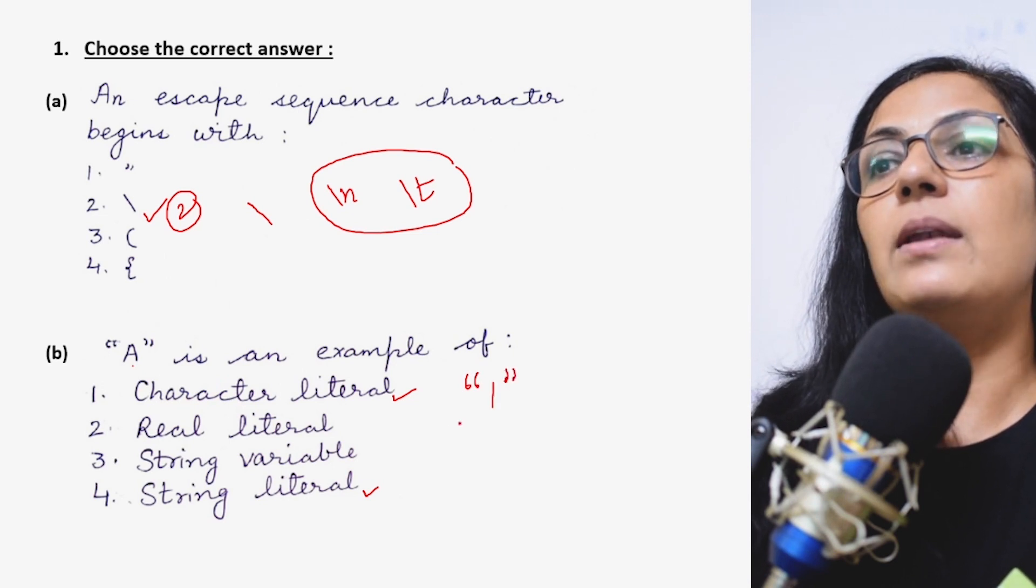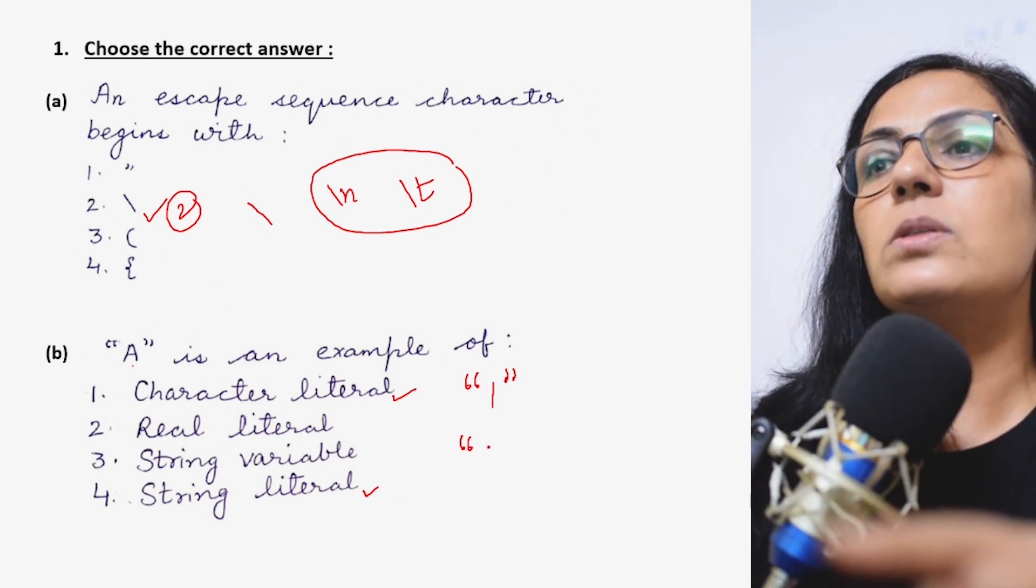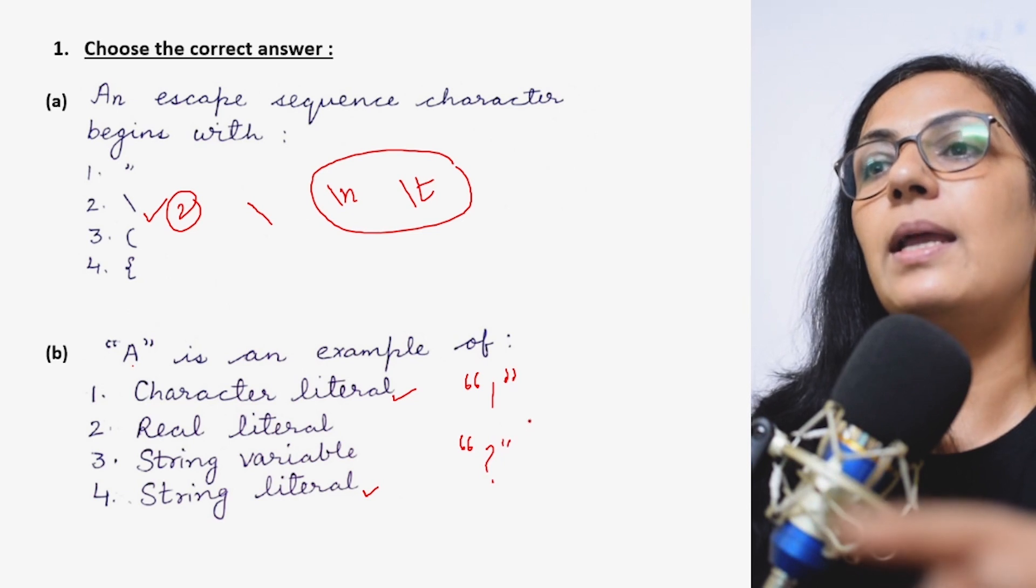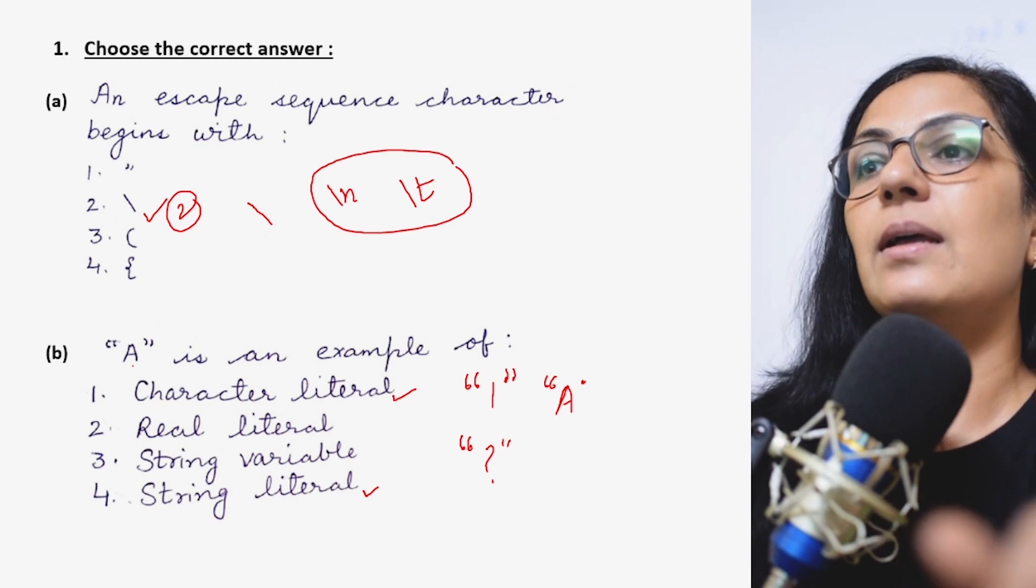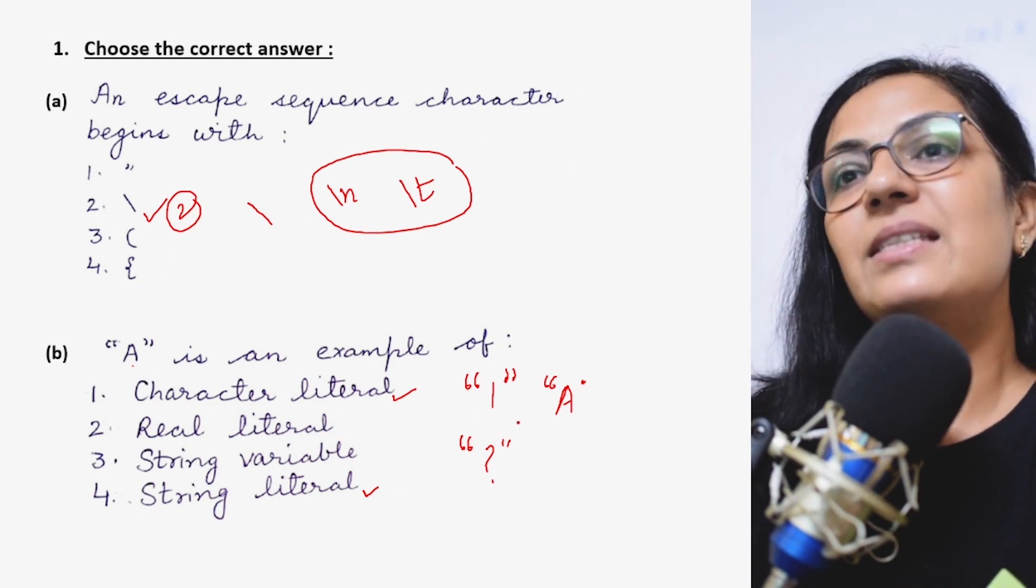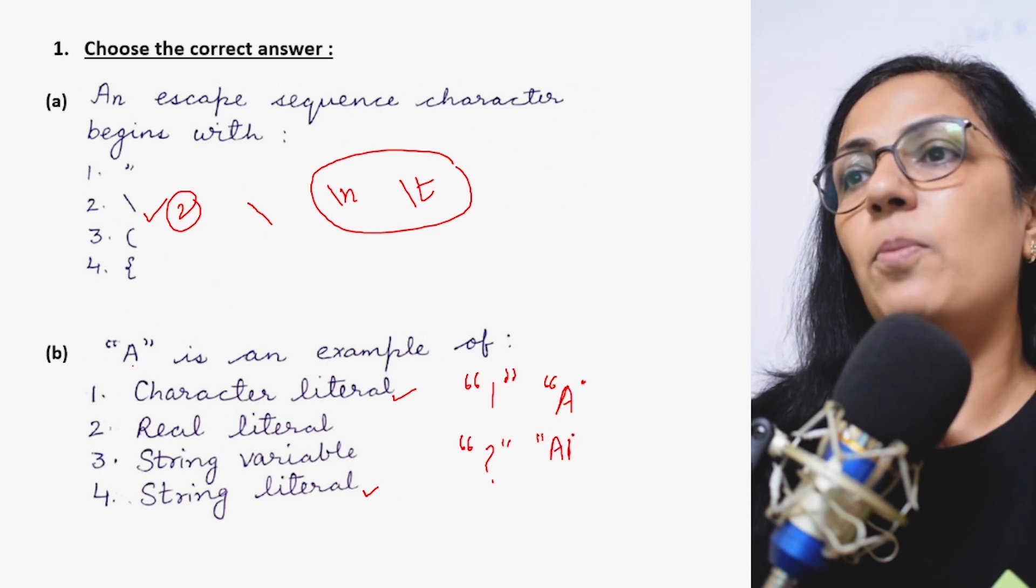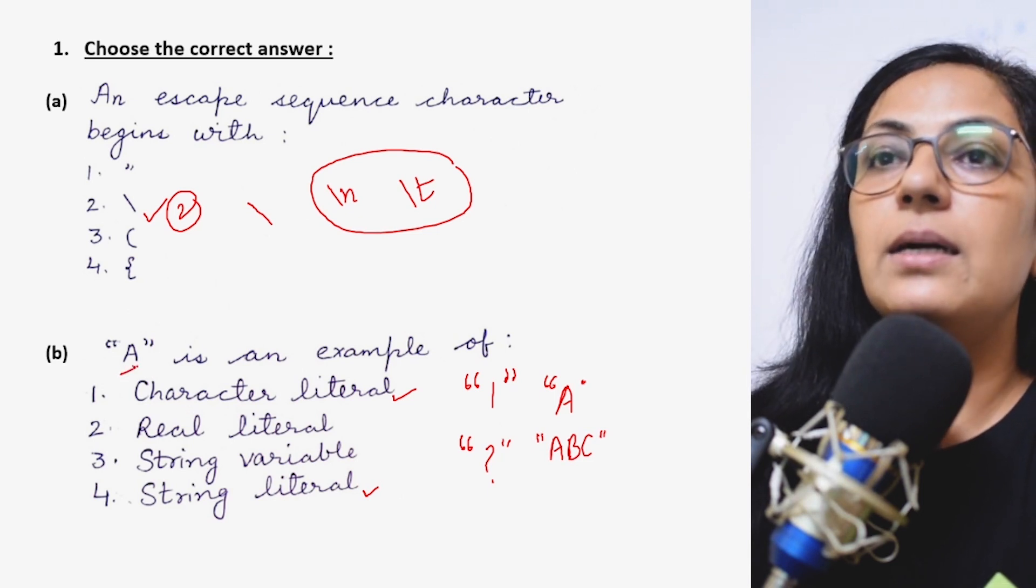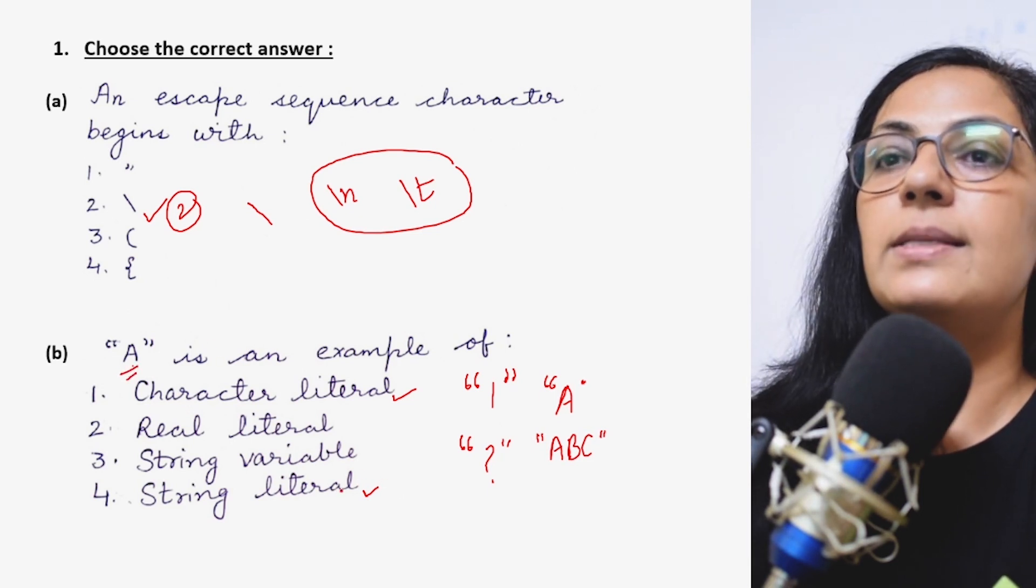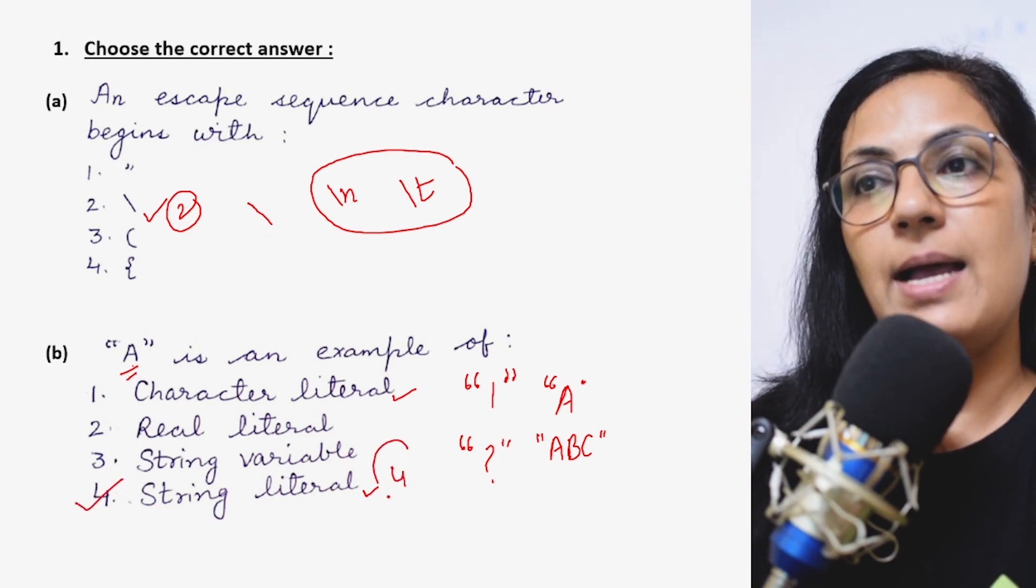If you are writing one within double quotes, it is not a numeric literal, it is string literal. Anything which is enclosed within double quotes, whether it is a special character, a digit, or a letter, it will be string literal. Anything maybe a group of characters is also string literal, or any single letter or digit enclosed within double quotes is string literal. So option 4 is the correct answer.